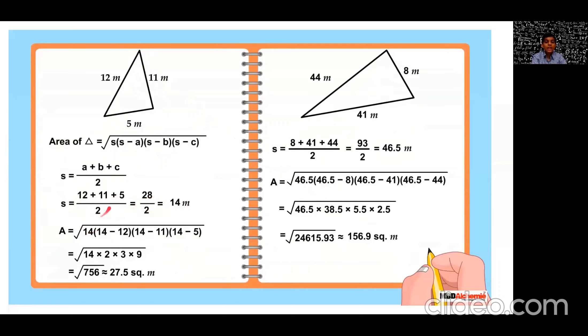So now the area equal to root of 14 into 14 minus 12 into 14 minus 11 into 14 minus 5, which is equal to square root of 14 into 2 into 3 into 9, which is equal to square root of 756, which is approximately 27.5 square meters.